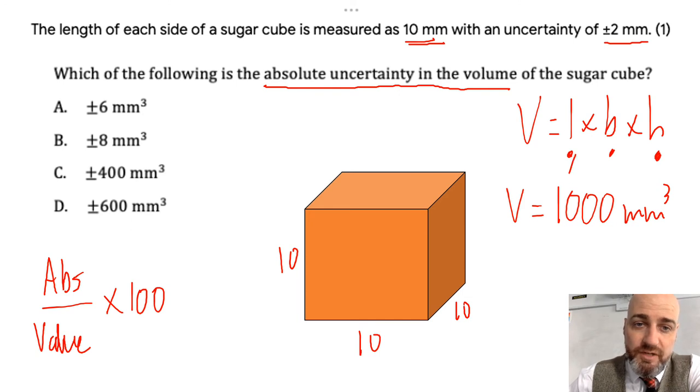So what we're going to have to do is we're going to have to work out the percentage uncertainties for length, breadth and height, and we're going to need to add them all together. Now they'll all be the same number, so not so bad.